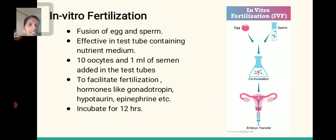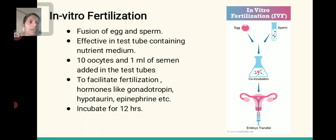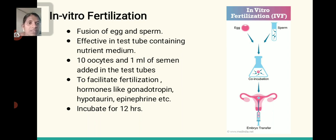In vitro fertilization: Egg and sperm are fused in a test tube containing nutrient medium. Ten oocytes and 1 ml of semen are added to the test tube. To facilitate fertilization, hormones like gonadotropin, hypotaurine, epinephrine, etc., are added. The mixture is then incubated for 12 hours. As shown in this diagram, egg and sperm are fused in a test tube containing medium with 10 oocytes and 1 ml of semen, to which hormones are added and incubated at 12 hours.